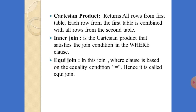Next is the inner join. This inner join is a Cartesian product that satisfies the join condition in the WHERE clause. The WHERE clause is used to satisfy the condition — if that particular criteria is met, then it will retrieve the records from both tables. That is the inner join.